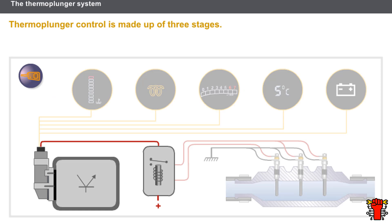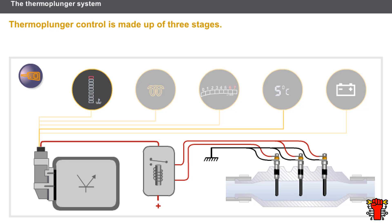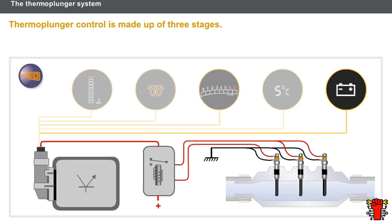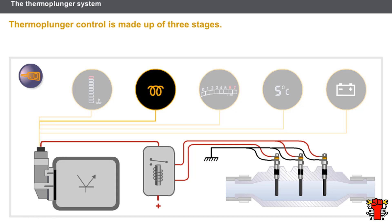Let us look in detail at the thermo plunger heating control. The injection computer controls the thermo plungers according to mapping related to the coolant temperature, the air temperature, and whether the following conditions are met: engine speed over a certain threshold, battery voltage over a certain value, and preheating completed.